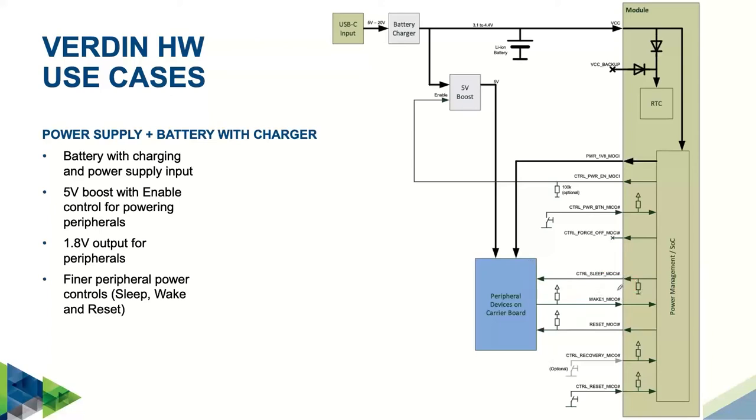Likewise, there's the control wake 1 MICO hash signal, which is an input to the module. If you want your system to wake from sleep based on an interrupt coming from a carrier board peripheral, that's what you should use. Again, this is pulled up to VCC and any peripheral that drives this to ground will wake your OS from sleep. As in the previous example, the control reset MOCI hash signal is connected and will reset carrier board peripherals when the module resets.